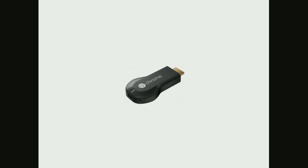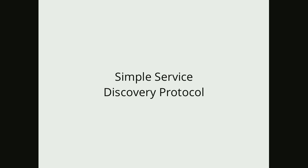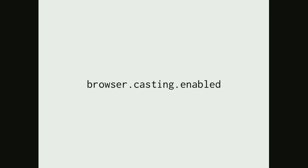Chromecasts work in Firefox — if you have one on your network, Firefox will be able to stream things to them. In order to discover these devices automatically, it uses a networking protocol called SSDP, which looks on the network for broadcast packets. If you don't want your browser doing this because you never use these things, you can disable it using this preference.